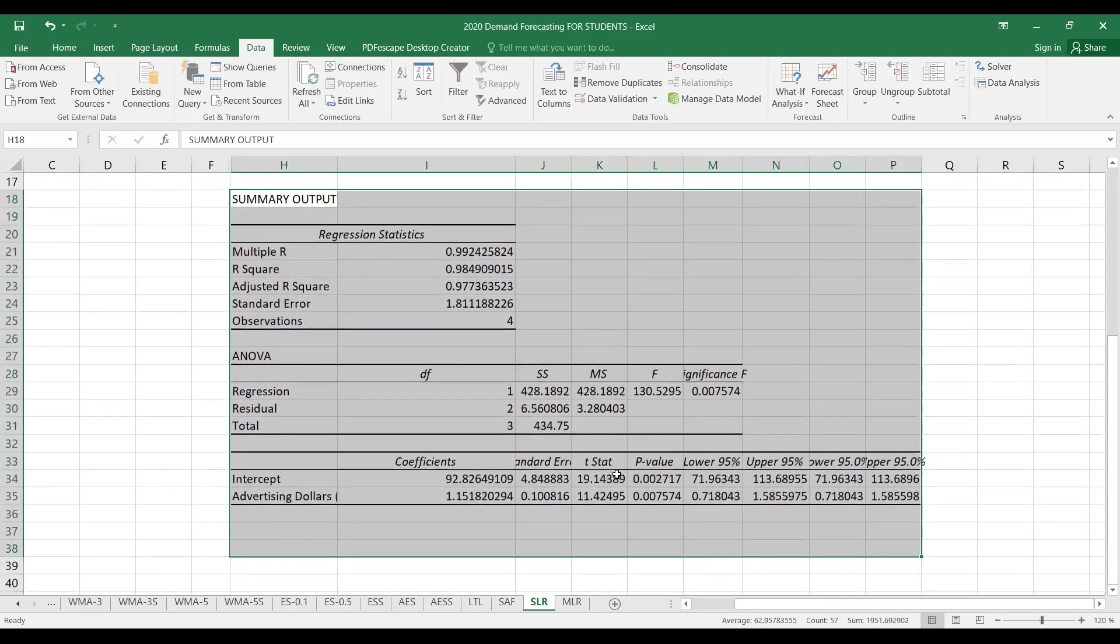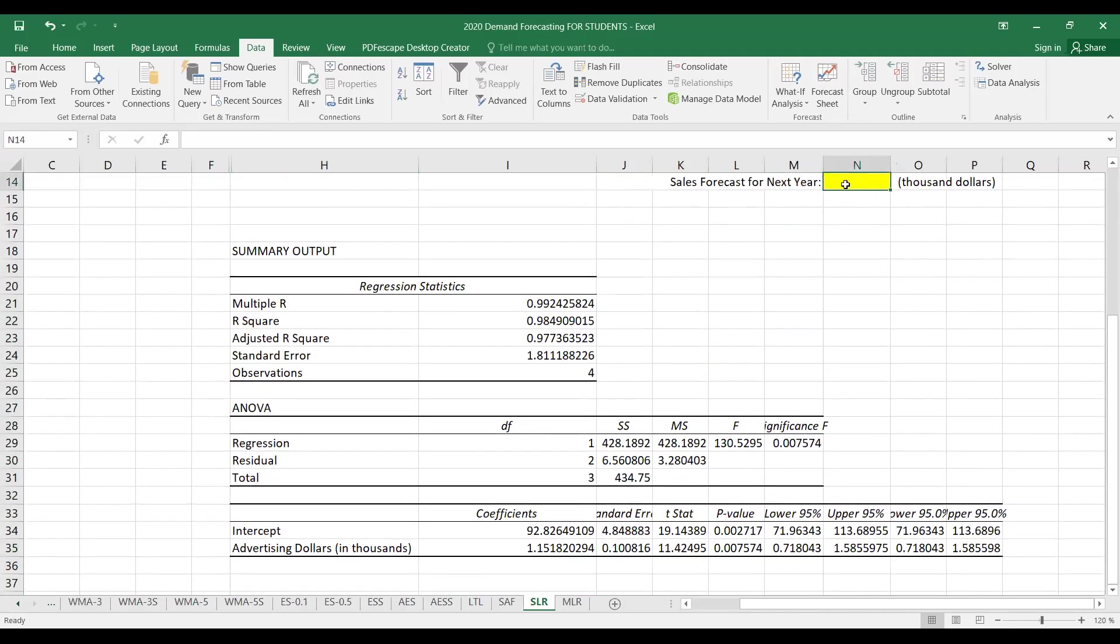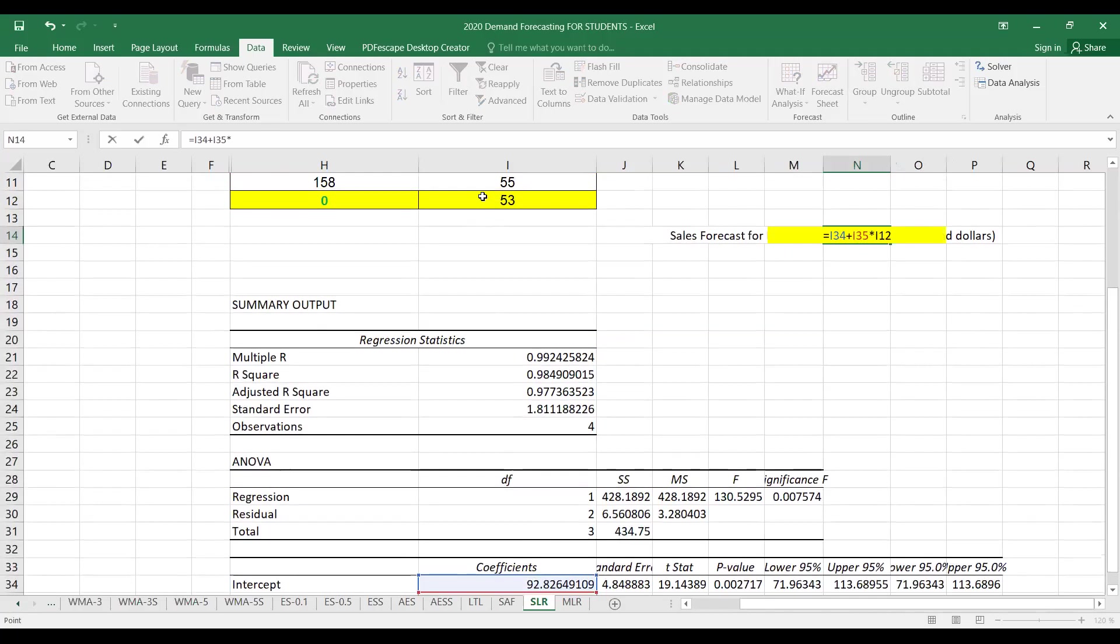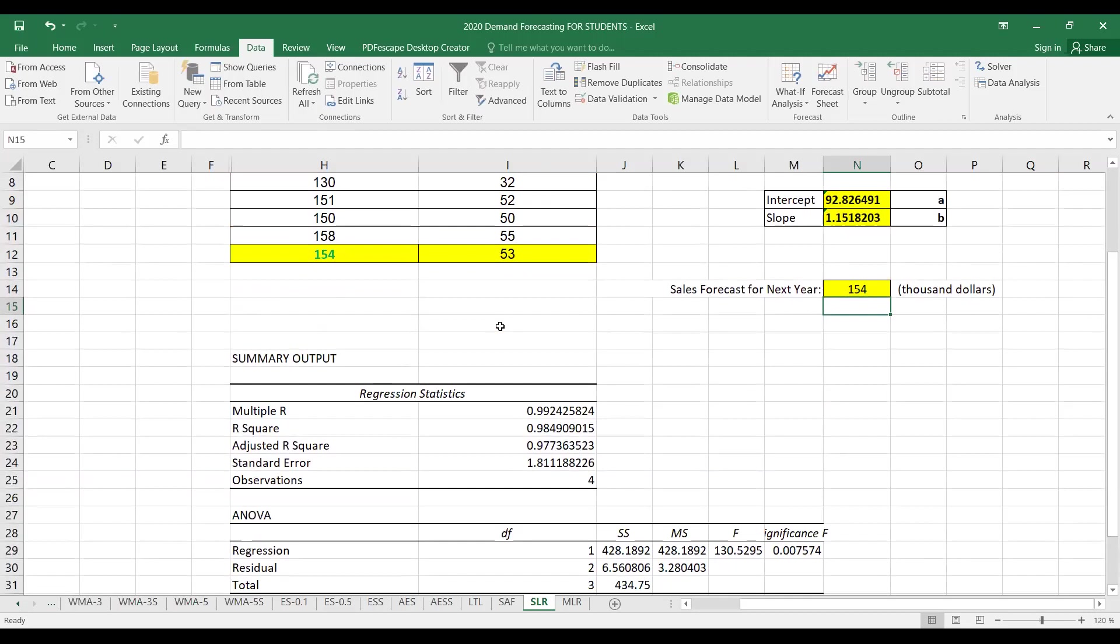We have found intercept and slope, the same values as we already obtained. The forecast will be equal to a plus bx, so intercept plus slope multiplied by $53,000. We get the same result that we can expect sales of $154,000 if we spend $53,000 on advertisements.